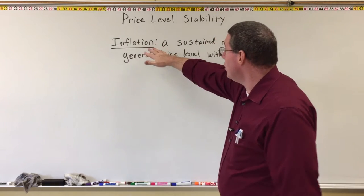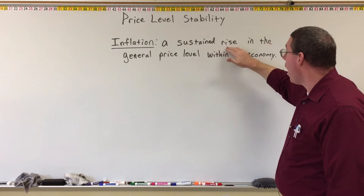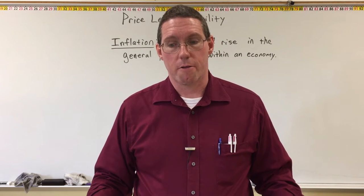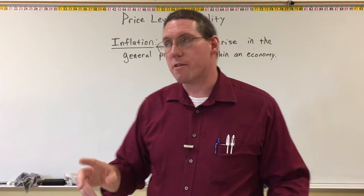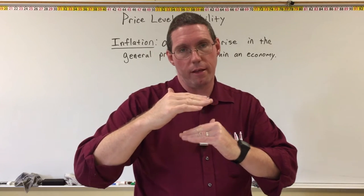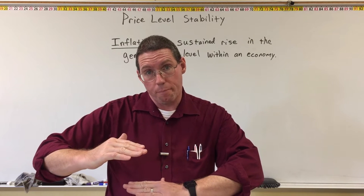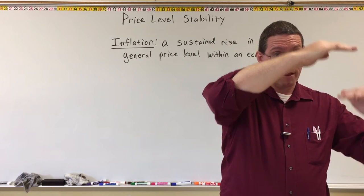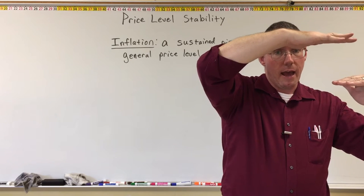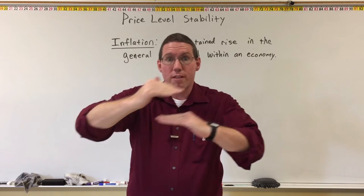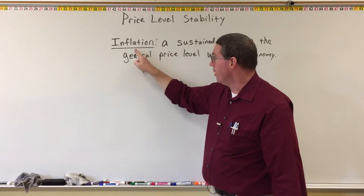Inflation is a sustained rise in the general price level of stuff in the economy. It's not just when the price of something goes up because of fluctuations — like coupons or sales. In 1990 the window of gas prices went from $0.89 to $0.98 a gallon. But here we are almost 30 years later and the price window is a lot higher — between $2.70 and $3.00 a gallon. The fact that that window of price fluctuation has risen over 30 years — that is what we're talking about when we say inflation.